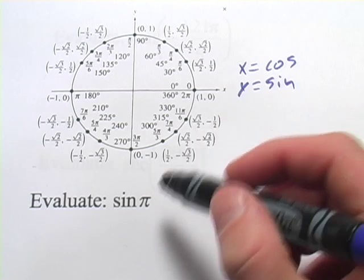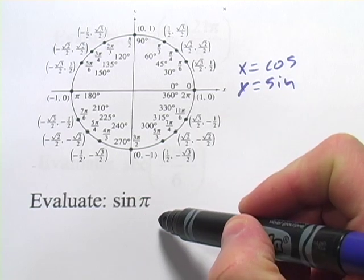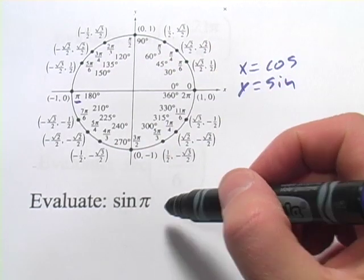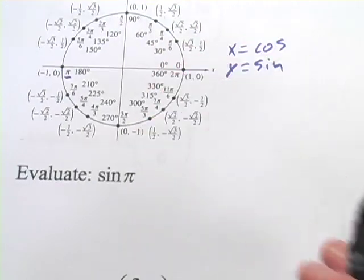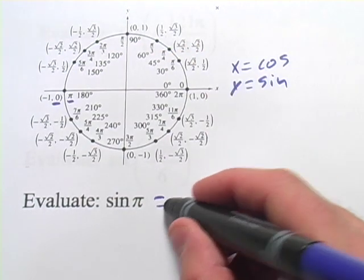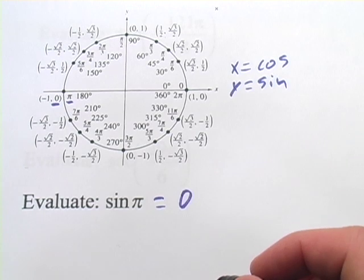So that's how we're going to find these exact values. So when it says evaluate the sine of pi, we're just going to go around the circle until we get to pi, right there, and look at the y value of the coordinate. And the y value is 0. So the sine of pi is exactly 0.